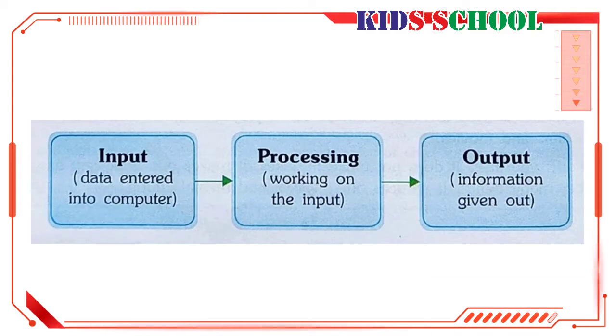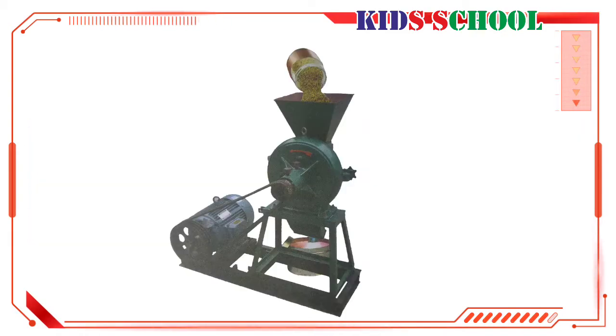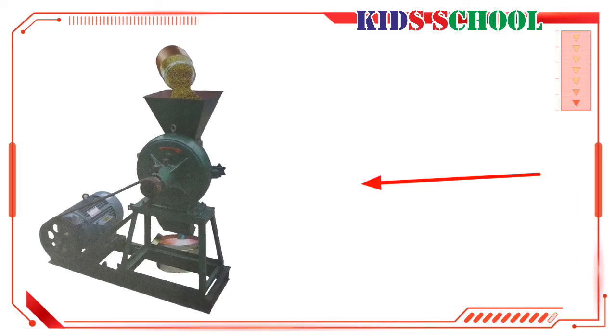Now, let's understand the terms input, processing, and output. Dear students, you must have seen a flour mill. In a flour mill, food grains are put into the big vessel at the top. They are crushed in the grinder, and flour comes out from the opening at the bottom of the flour mill.